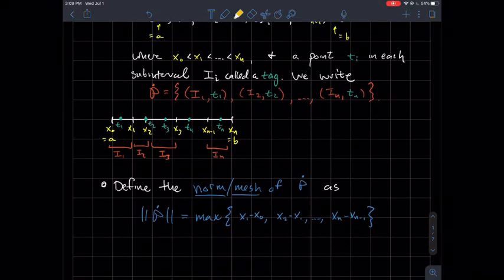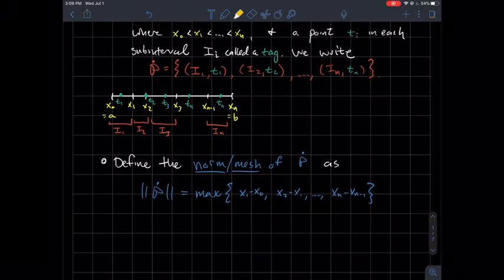Okay, so the next concept we want to talk about with a partition is its norm or its mesh. So the mesh of p dot is defined like this. These two bars look like absolute values, we'll call that a norm probably. If you take a linear algebra class, you might call it a norm there too. But what is it? It's the maximum of x1 minus x0 or x2 minus x1, and so on. So pick the biggest one of these numbers and that's the norm.